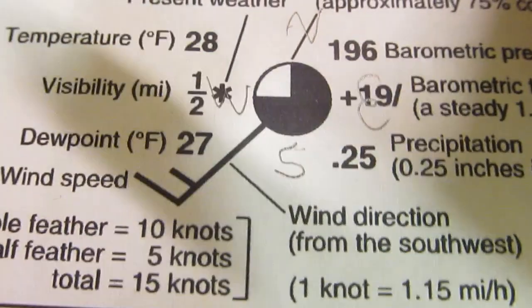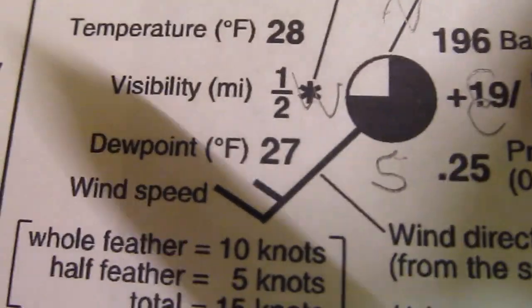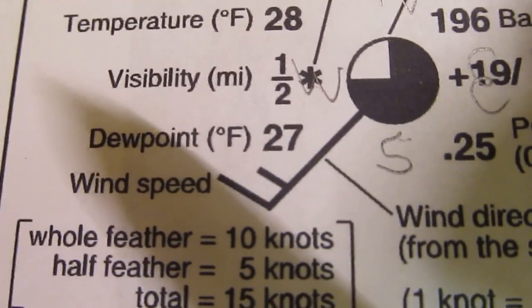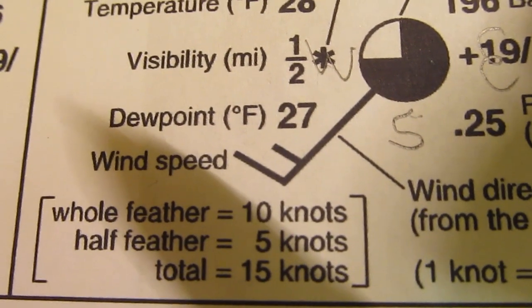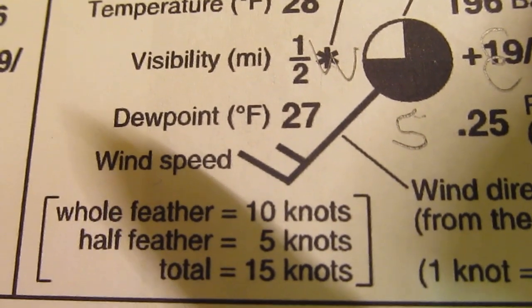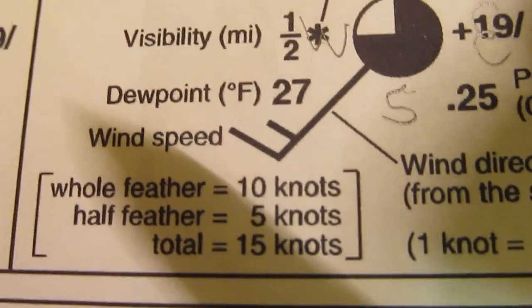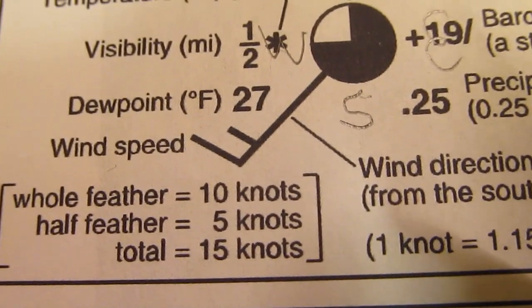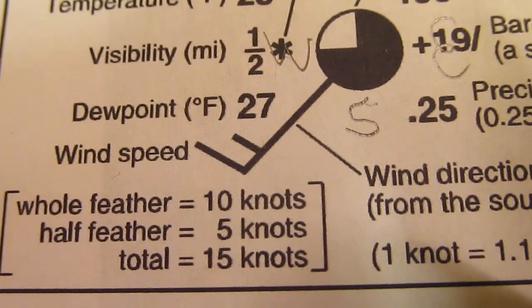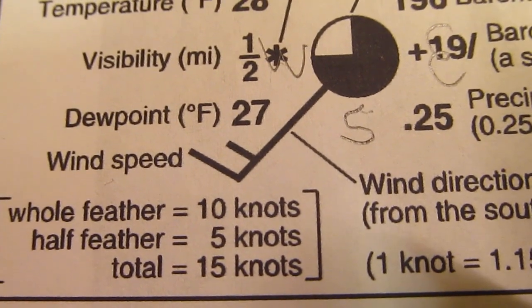The wind speed is told to us by the little flags. So you can see, well, the reference tables calls them feathers. So you can see there's a big feather and a little feather. The big feather is 10 knots, and the little feather means 5 knots. So if we add the two of them up, we get 15.